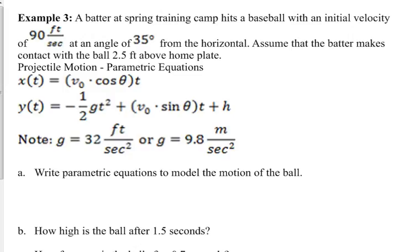Okay, so this says a batter at spring training camp hits a baseball with an initial velocity of 90 feet per second at an angle of 35 degrees from the horizontal. Assume that the batter makes contact with the ball 2.5 feet above home plate. So that's the situation.